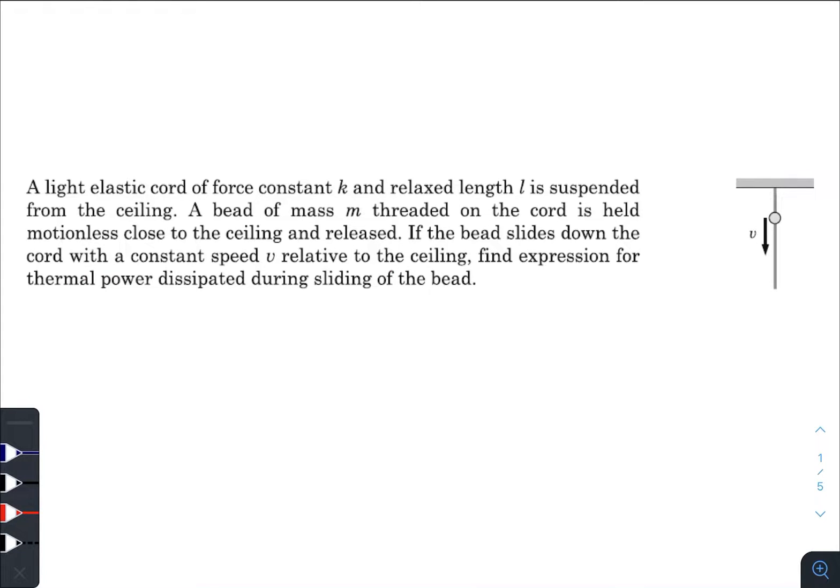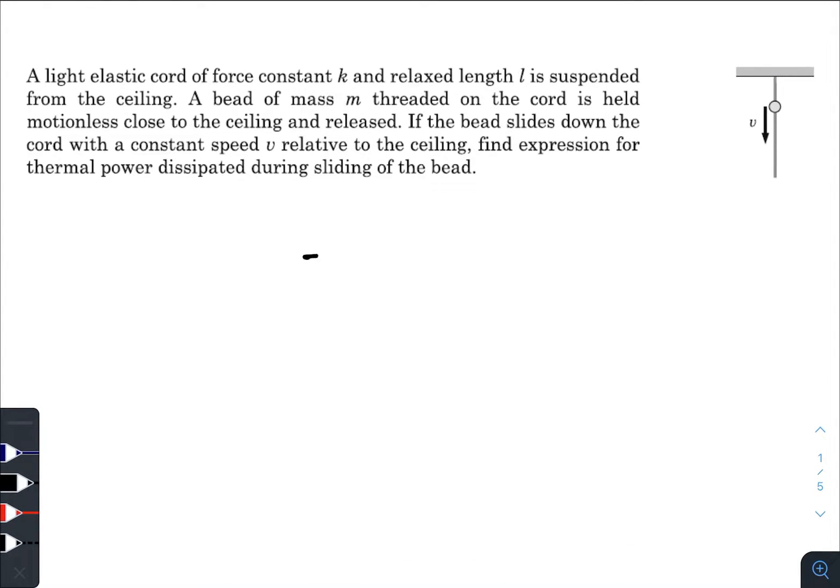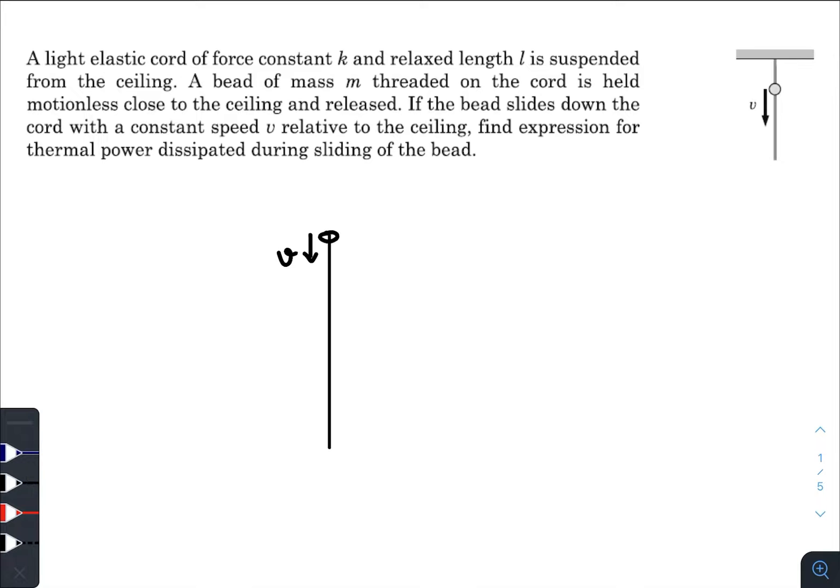So basically there is a thread, and a bead is released which starts its motion with an initial velocity V. Its speed remains constant with respect to the ceiling, and this string is elastic in nature. As we know that V is constant, that means some kind of frictional force is acting on the bead in the upward direction which balances MG, so that the net force on the bead is zero.